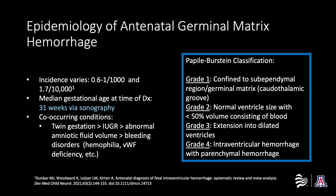Germinal matrix hemorrhage is the most common cause of neonatal intracranial hemorrhage. It is inversely correlated with birth weight and gestational age and more frequently co-occurs with twin gestation and intrauterine growth restriction. Though more often described postnatally with sonography, the same germinal matrix hemorrhages can be observed in fetuses imaged with fetal MRI. The Papyl-Burstein classification is a scale commonly used to grade such hemorrhage.